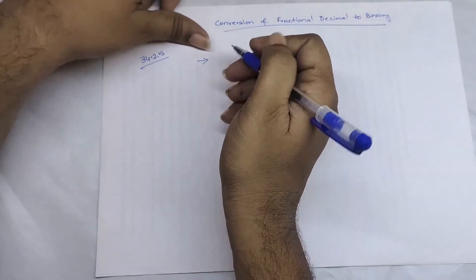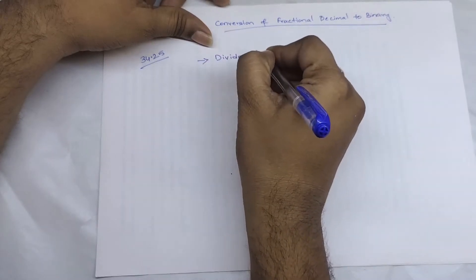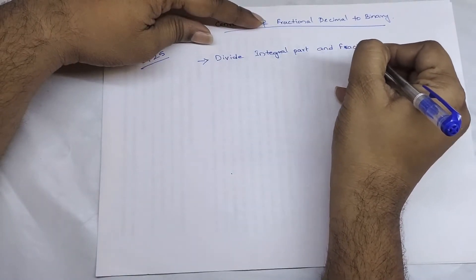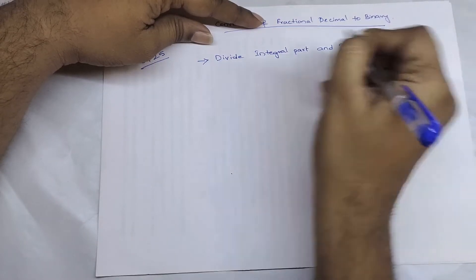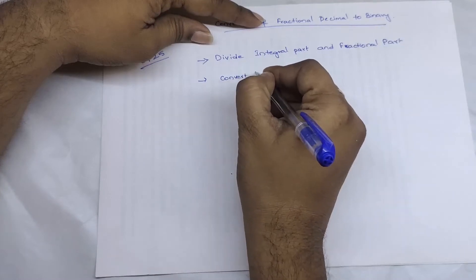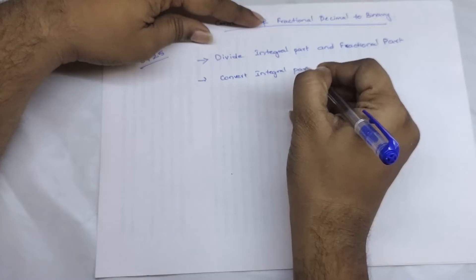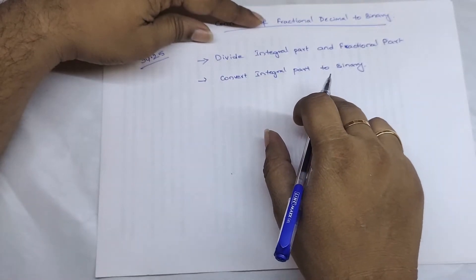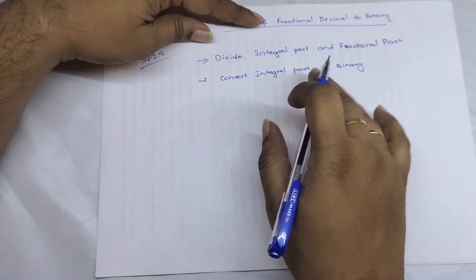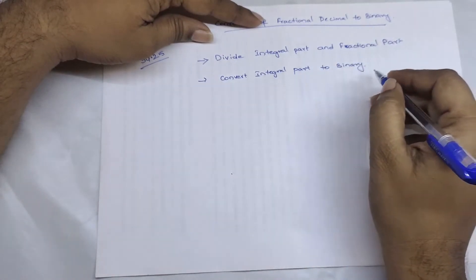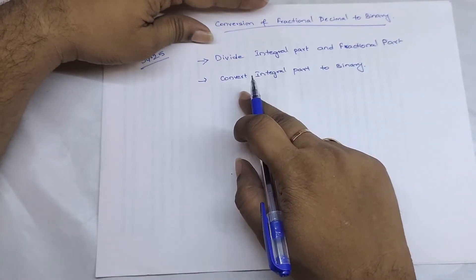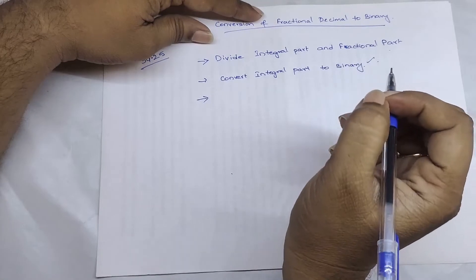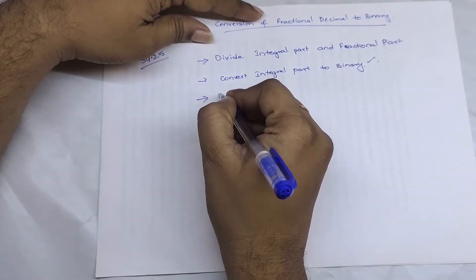The first step is to divide the integral part and fractional part. Convert the integral part to binary as we already know — we have to divide by two and store the remainder. That procedure is the same as converting decimal to binary from the previous session. The question is: what about the fractional part? There is a small difference for this conversion.